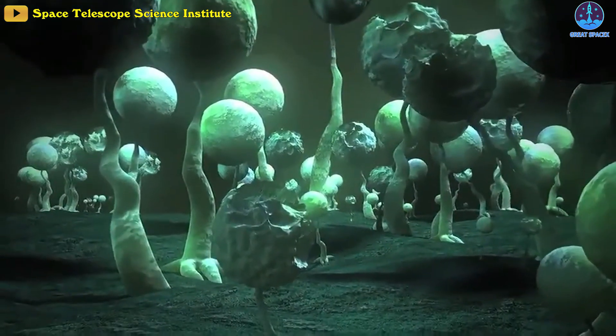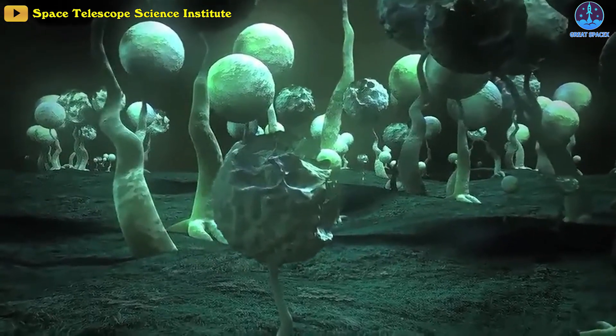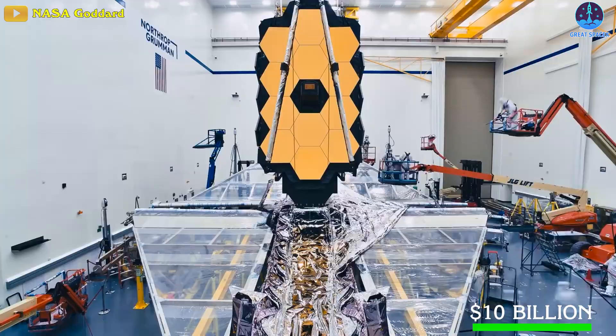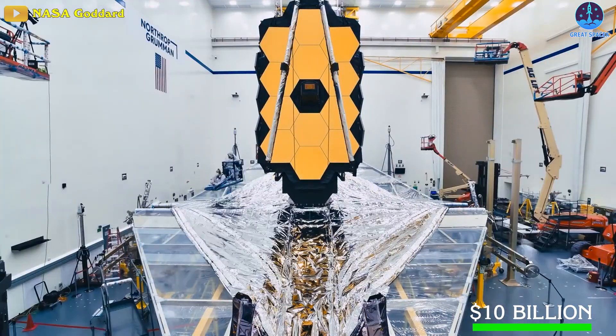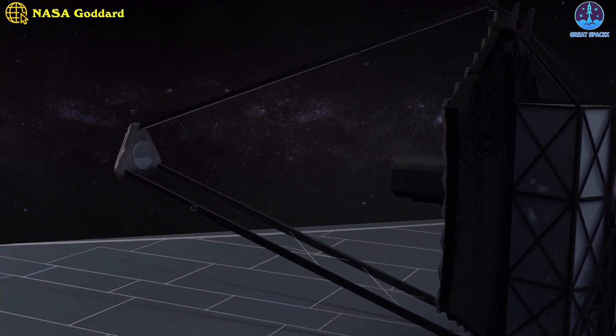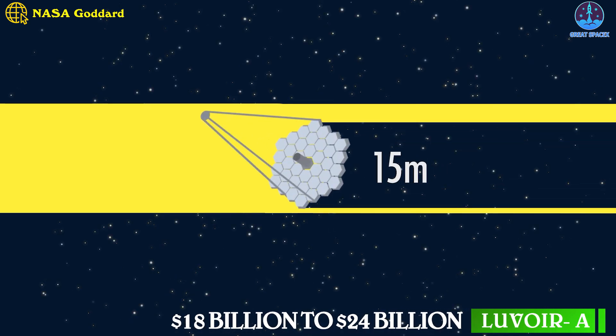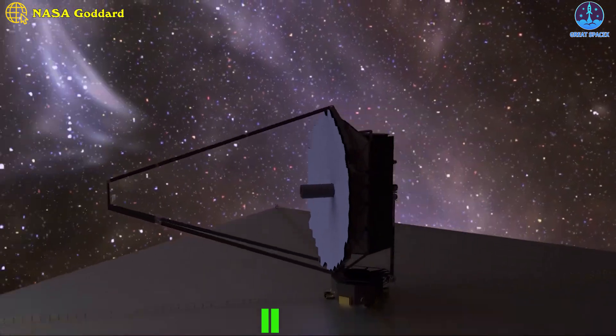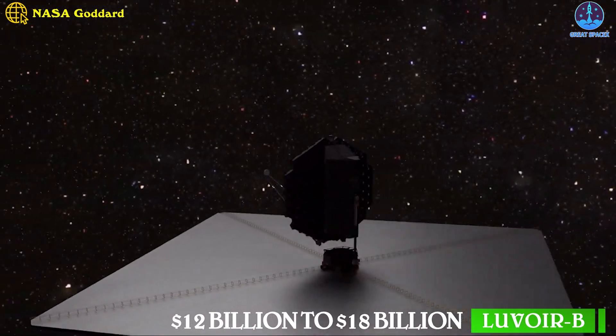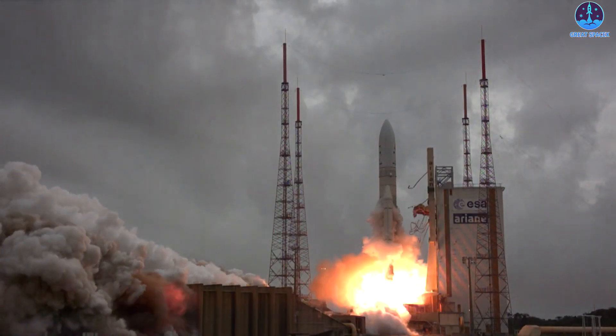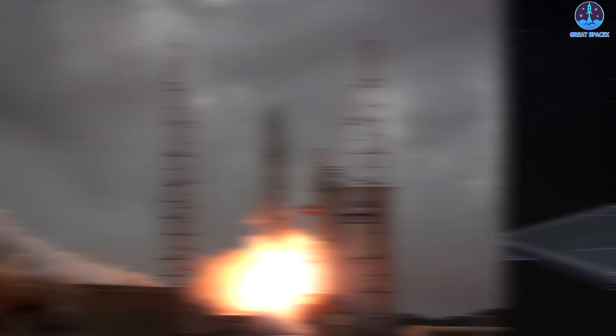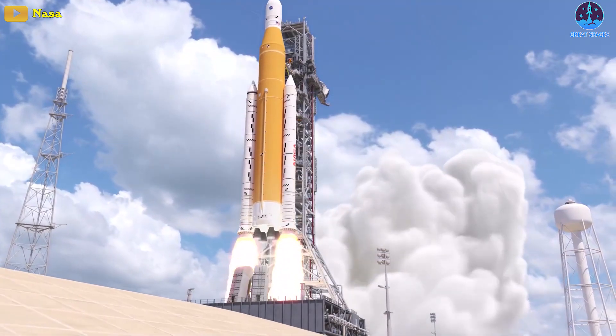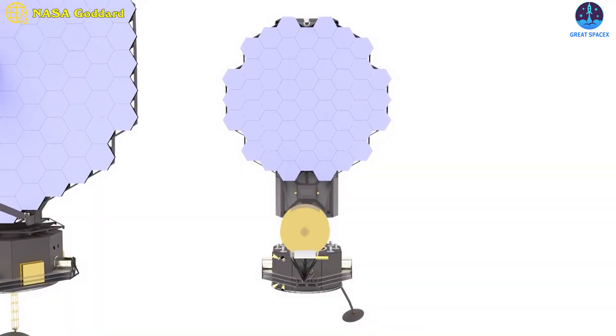As for expenses, while Webb has cost NASA a whopping 10 billion dollars, with LUVOIR it's even doubled. Lifetime cost estimates are 18 billion to 24 billion dollars for LUVOIR A and 12 billion to 18 billion for LUVOIR B. If James Webb was launched by an Ariane 5 rocket, LUVOIR A is designed for launch on NASA's planned Space Launch System, or SLS.